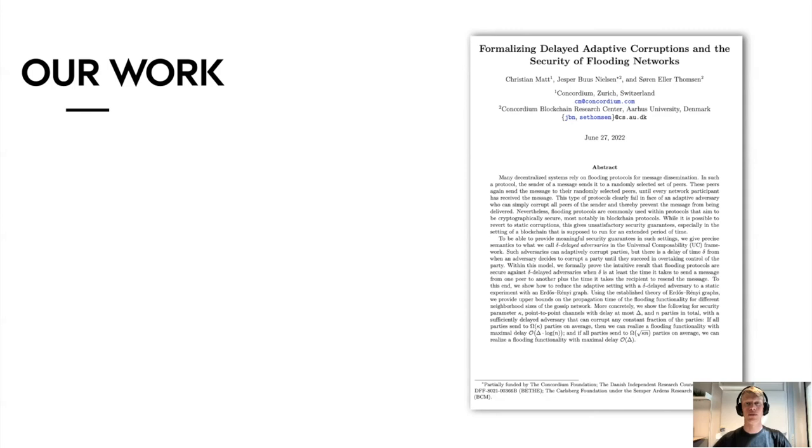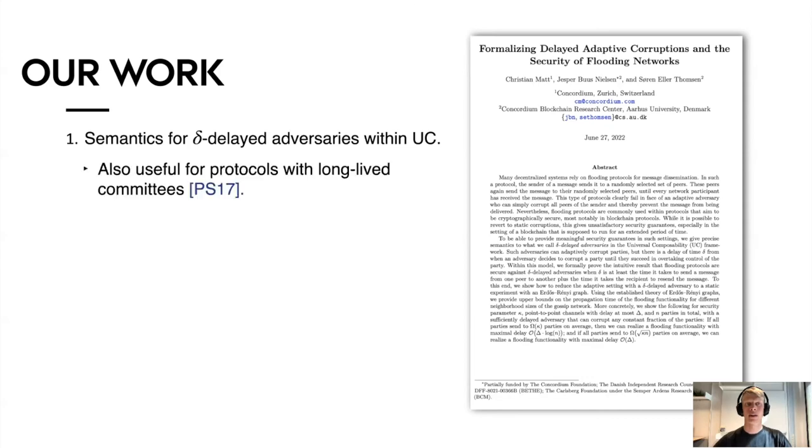Our work has two main contributions. First, we provide a formal model for the semantics of delta-delayed adversaries within UC. This is both useful for flooding, but also for protocols with long-lived committees. For example, Pass and Shi used an informal model that was similar to this in 2017.